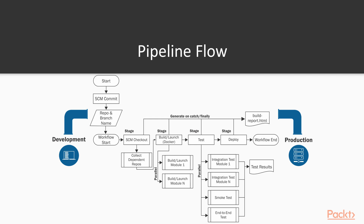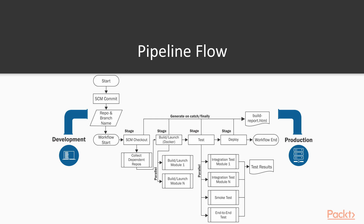Here is a visual example taken from the Jenkins website of how a pipeline might look like. In particular, this is a CD pipeline that builds, tests and deploys code through multiple stages from development to production.